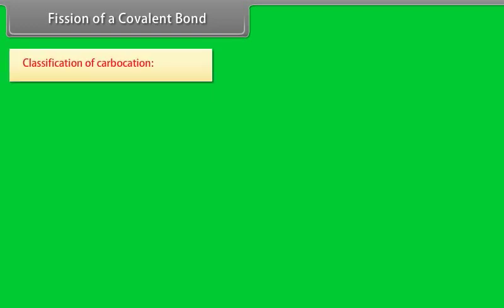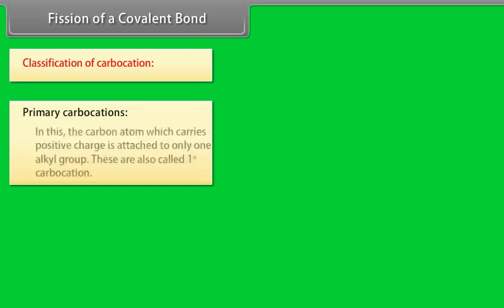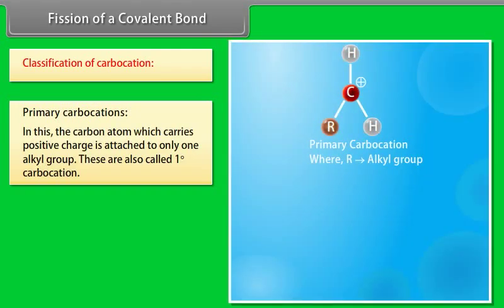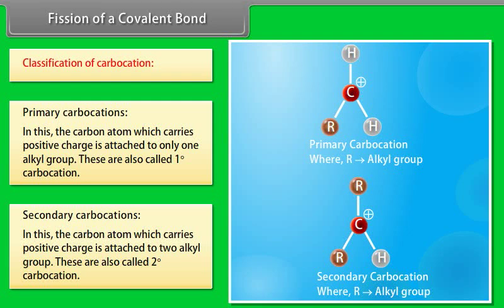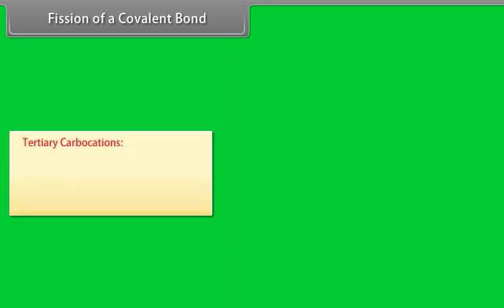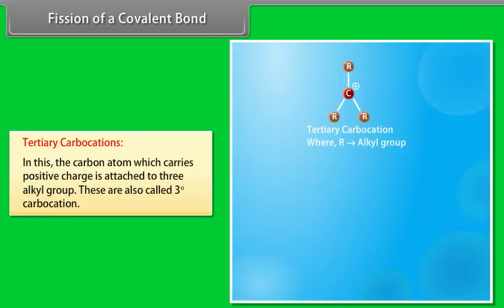Classification of carbocations: in primary carbocations, the carbon atom carrying the positive charge is attached to only one alkyl group — also called first-degree carbocations. In secondary carbocations, the carbon atom is attached to two alkyl groups — also called second-degree carbocations. In tertiary carbocations, the carbon atom is attached to three alkyl groups — also called third-degree carbocations.